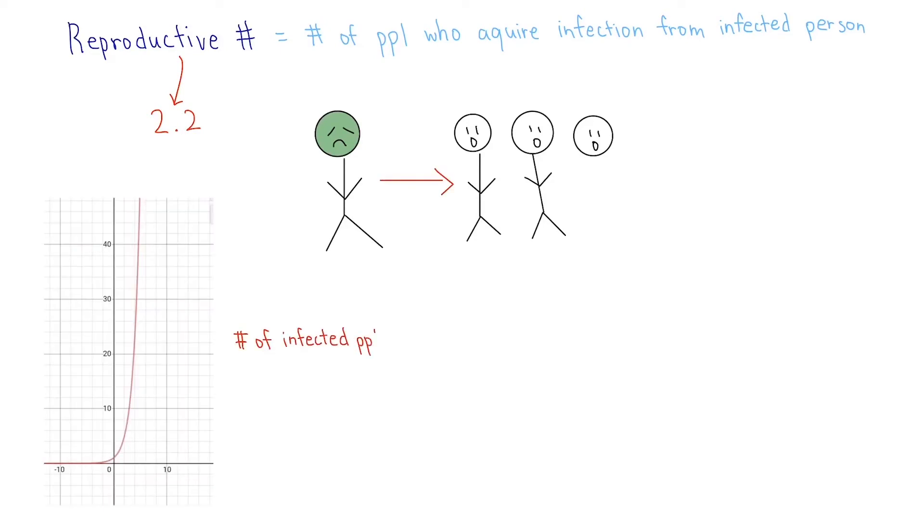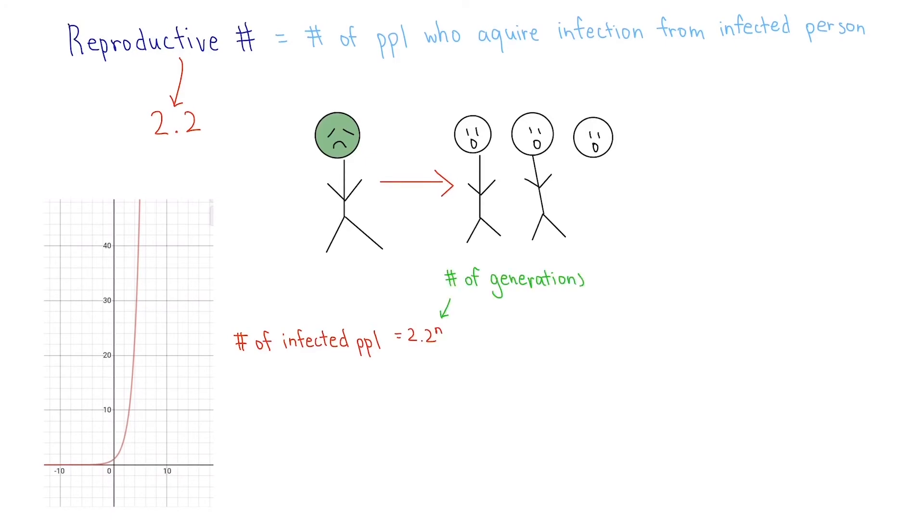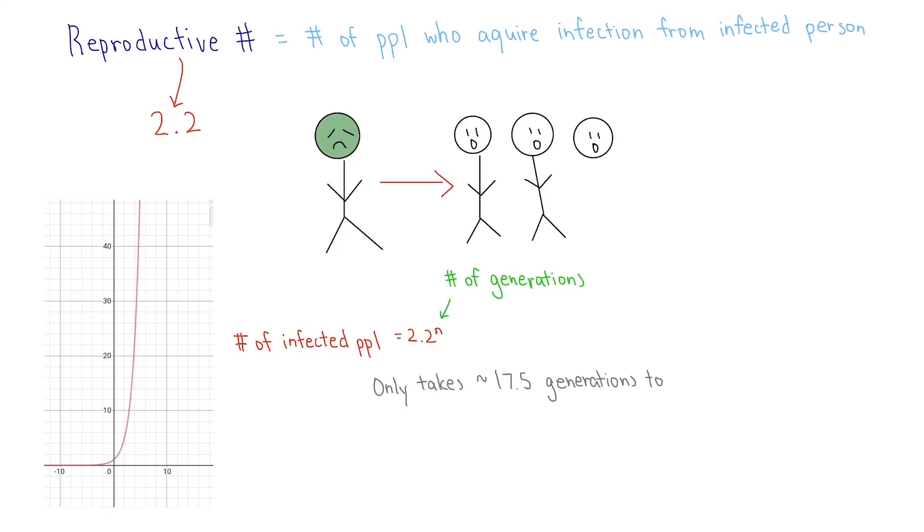Mathematically represented by 2.2 to the power of n. This is why so many people have been affected so far, and why you should stay tuned to the end to hear our advice on how to stay safe.